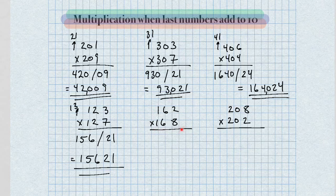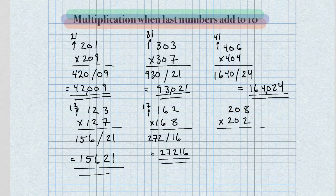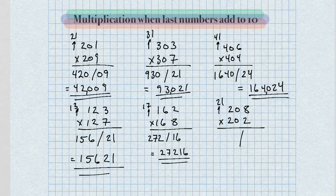Next problem, 162 times 168. The next number up from 16 is 17. So 16 times 17 gives us 272 for the left-hand side. For the right-hand side, 2 times 8 is 16 — that's our answer. Last one, 208 times 202 — the next number up from 20 is 21. So for the left-hand side we get 420, and 8 times 2 is 16 for our answer.